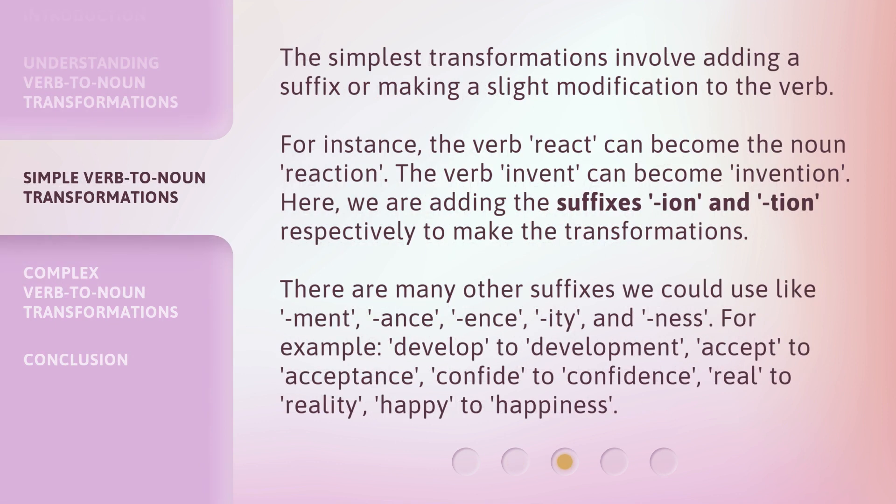The simplest transformations involve adding a suffix or making a slight modification to the verb. For instance, the verb 'react' can become the noun 'reaction.' The verb 'invent' can become 'invention.' Here, we are adding the suffixes '-ion' and '-tion' respectively to make the transformations.